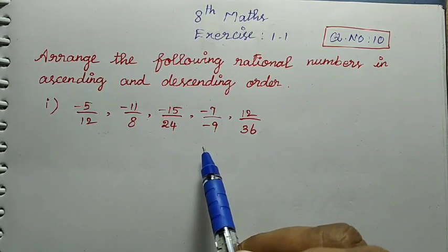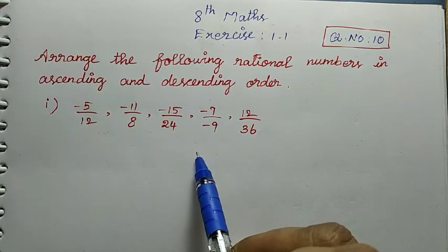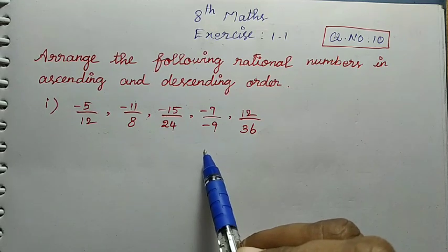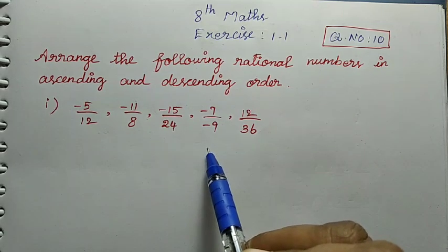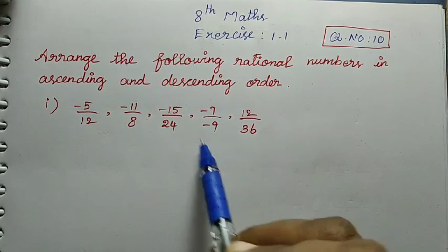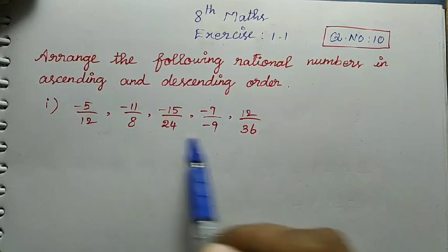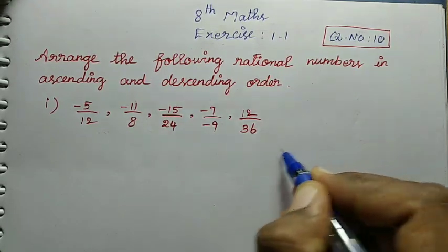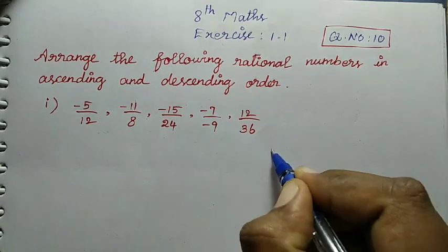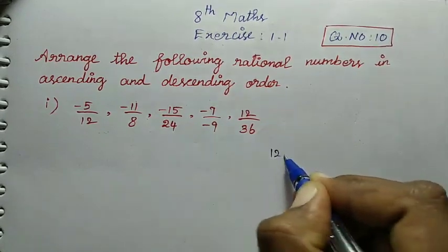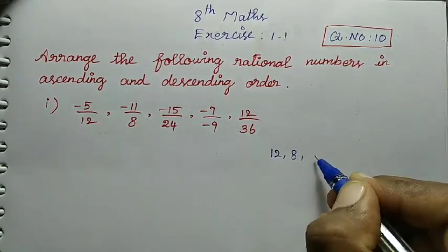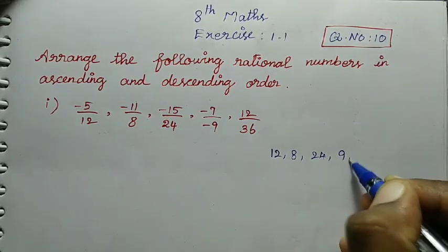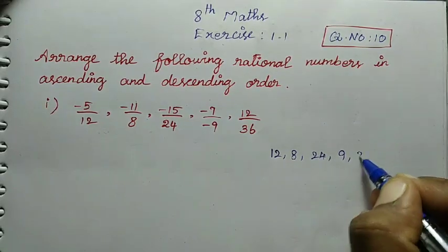If you compare the rational numbers, we need the highest denominator value. Looking at the denominators: 12, 8, 24, 9, and 36. The highest value among these is 36. So, if we compare the rational numbers, nine and thirty-six are key values.